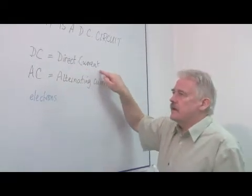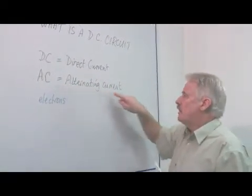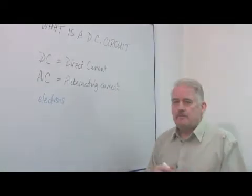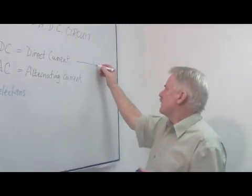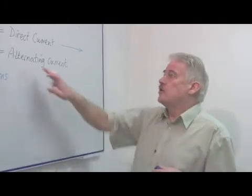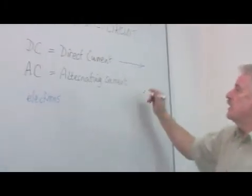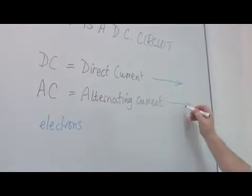DC stands for direct current, AC for alternating current. So you can imagine that if I talk about direct current, it is current going in one direction, whereas alternating current goes backwards and forwards.